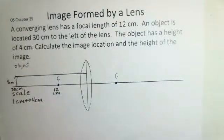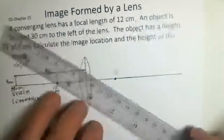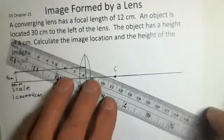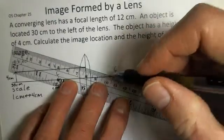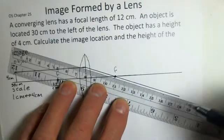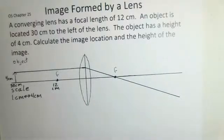Rule number one says a ray that comes in parallel to the optic axis will be bent and sent through the focal point. I'm going to line that up and draw a nice long line for that ray continuing off to the right.